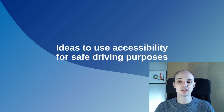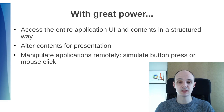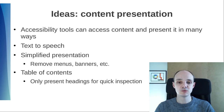Finally, here are some ideas of potential uses of accessibility technologies for safe driving purposes. These APIs are very powerful. They allow access to the entire application UI and contents in a structured way, alter contents for presentation, and even manipulate applications remotely, like simulating a button press or a mouse click. Since accessibility tools can access content and present it in many ways, what can we do with that? The most obvious idea is text-to-speech. This is what screen readers do, because it's useful to visually impaired people, but it's also useful to drivers who should keep their eyes on the road.